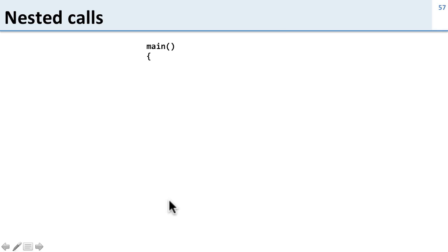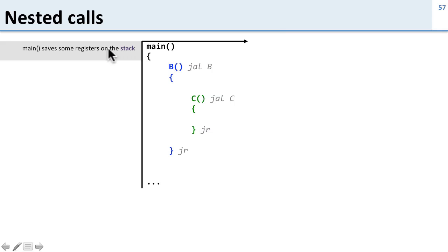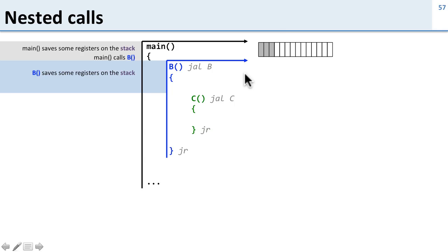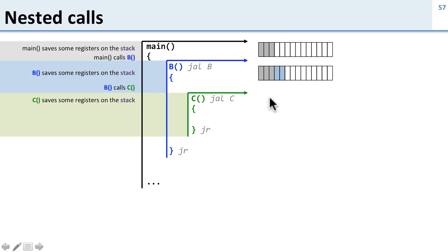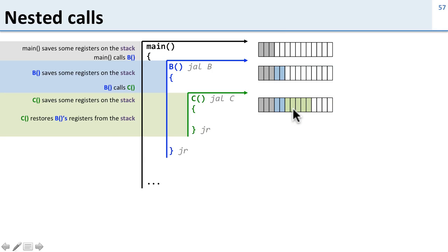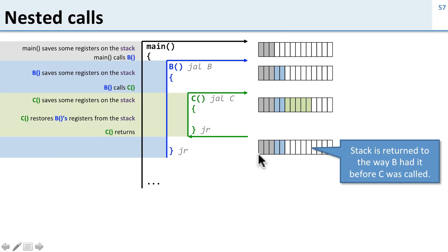Now let's look at how this all comes together with nested calls. Main is our caller and main calls B, so B is a callee for main. But if B then calls C, B becomes the caller for C and C is the callee. When we start, main stores some registers on the stack, then calls B. B also saves some registers on the stack before calling C. When C executes, it stores some registers on the stack, processes, then restores registers and returns to B. When we get back to B, the stack is exactly the way it was before B called C — C stored data on the stack but restored it and moved the stack pointer back before returning.